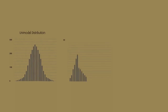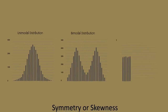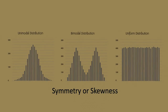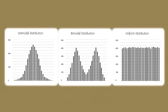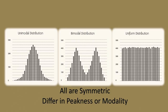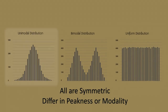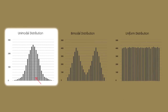When describing the shape of a distribution, we should consider symmetry or skewness, and peakness or modality — that is, the number of peaks or modes. All three distributions shown here would be referred to as symmetric, but they differ in modality. The first distribution is unimodal: it has one mode, roughly at 10, around which the observations are concentrated.